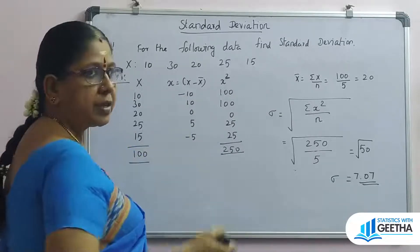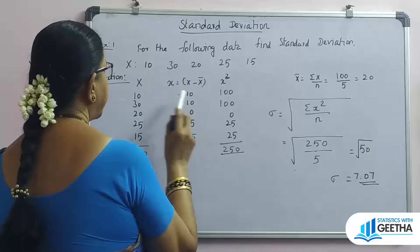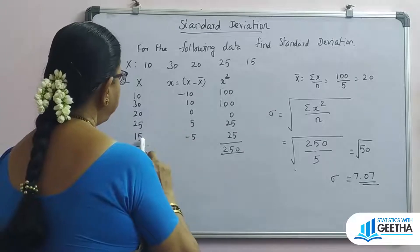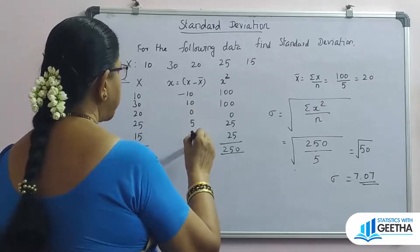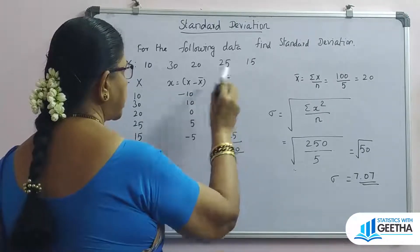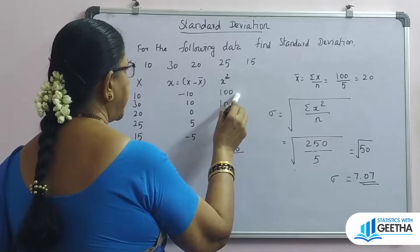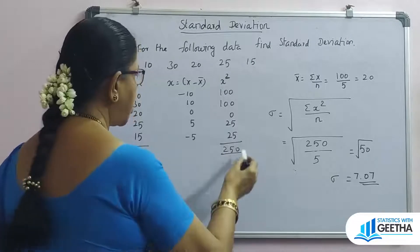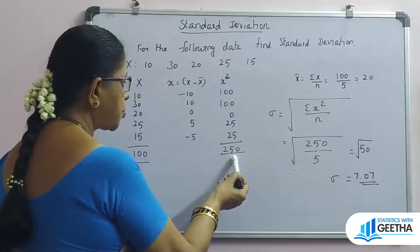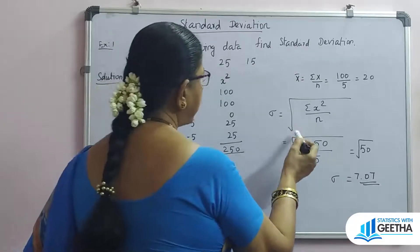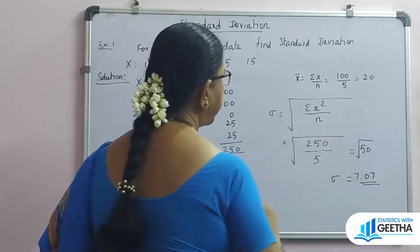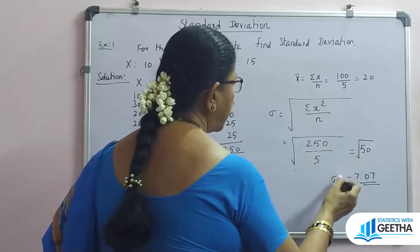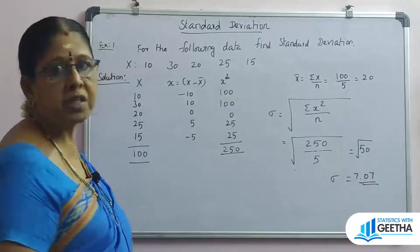With x-bar equal to 20, compute small x for each value: 10 minus 20 is minus 10; 30 minus 20 is 10; 20 minus 20 is 0; 25 minus 20 is 5; 15 minus 20 is minus 5. Then x squared values: 100, 100, 0, 25, 25 — total summation of small x squared is 250. Applying the formula: sigma equals square root of (250 divided by 5) equals square root of 50, so sigma equals 7.07.